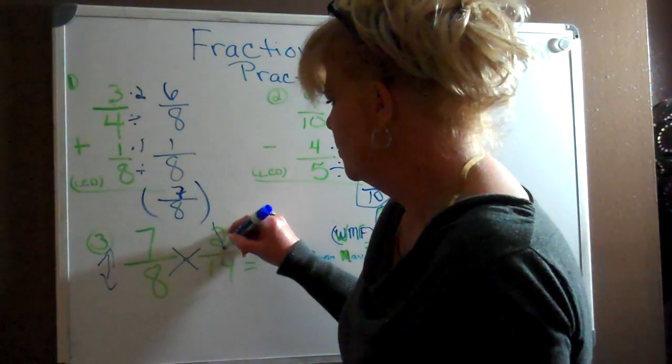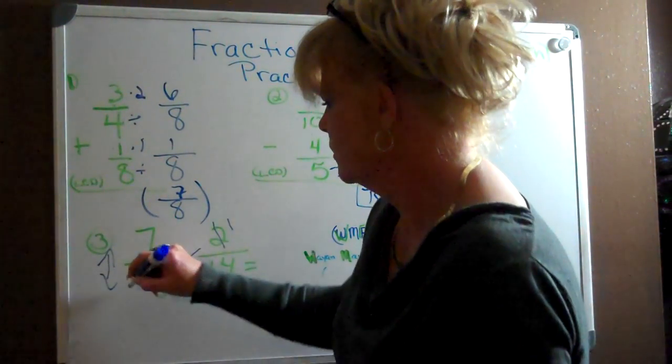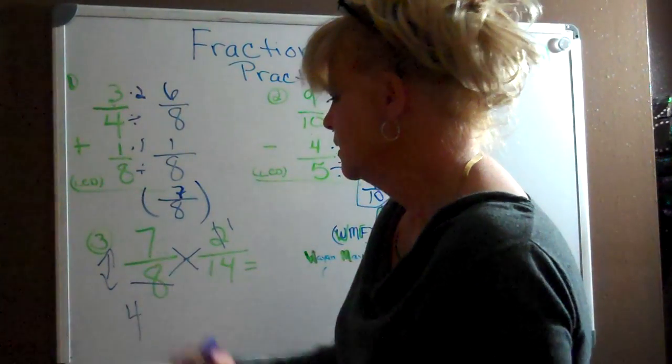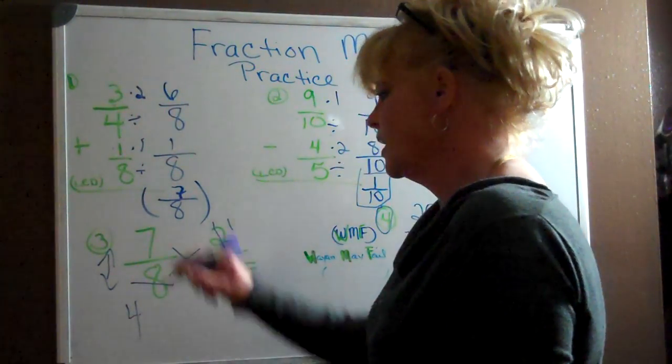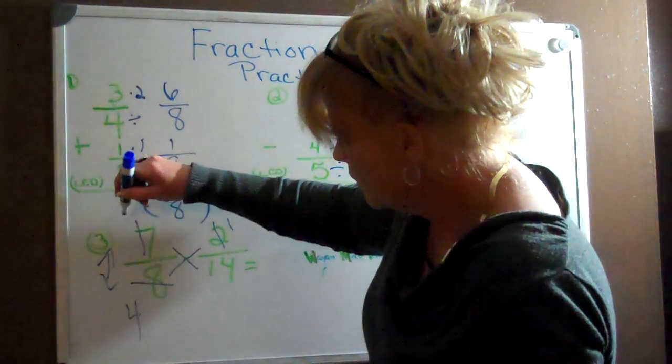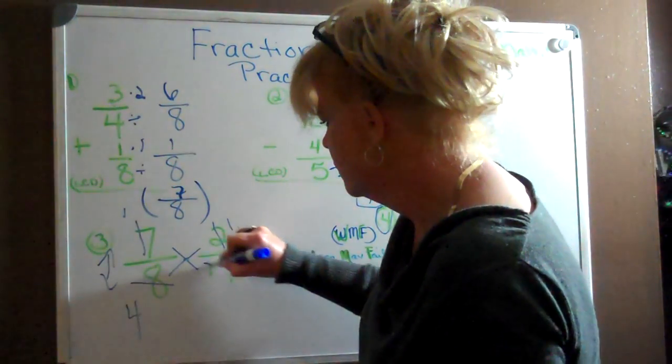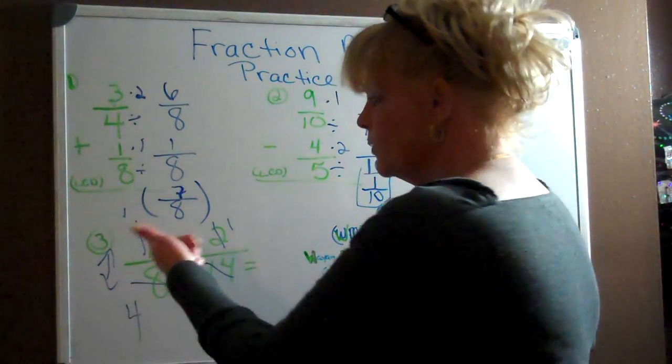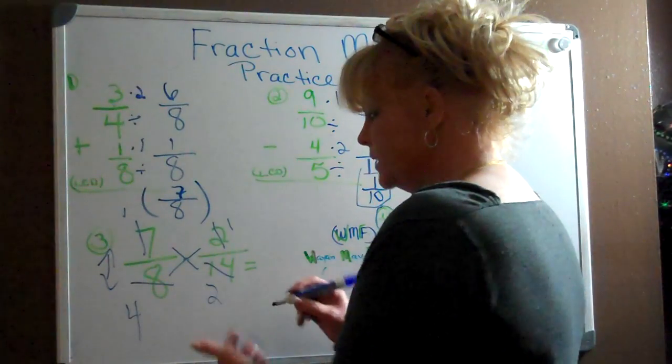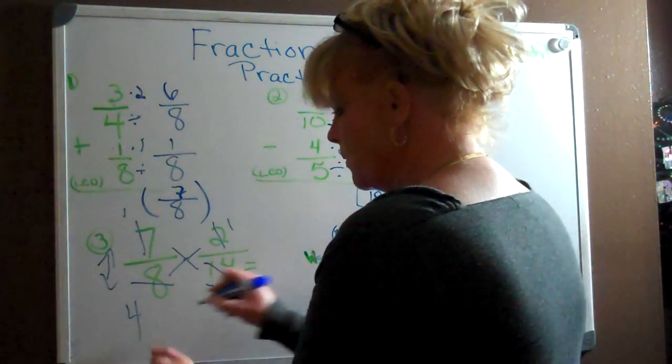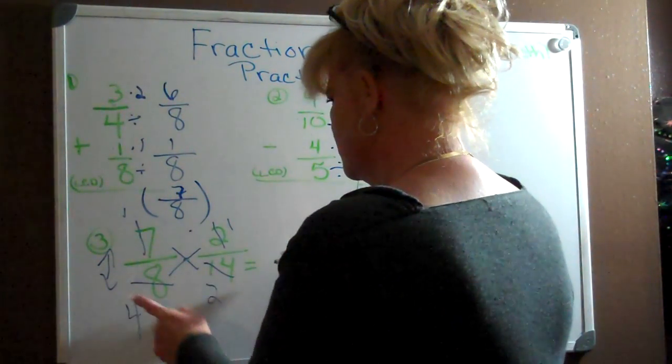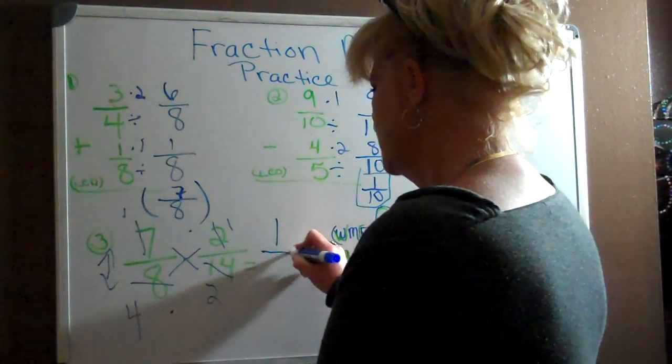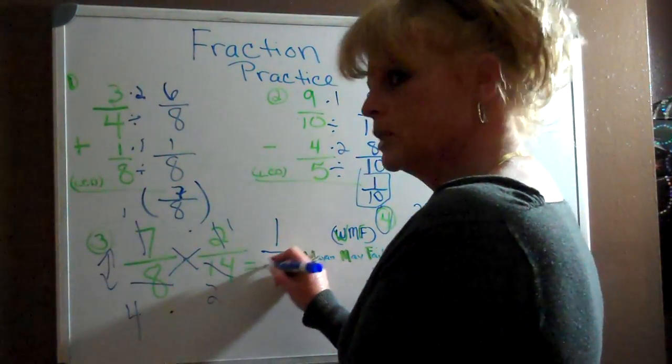So we know that two can go in itself, and two can go into eight four times. We just made it a lot simpler by doing that. Seven can go into 14 and itself. So seven can go into seven one time. Seven can go into 14 twice. Now all we have left is to multiply across. That's going to be one times one and four times two.